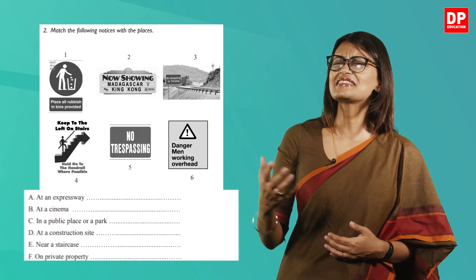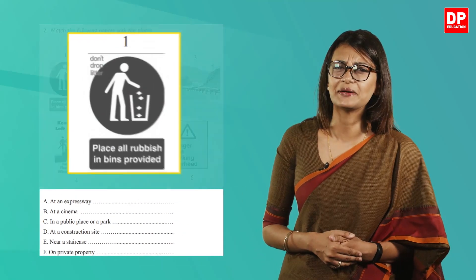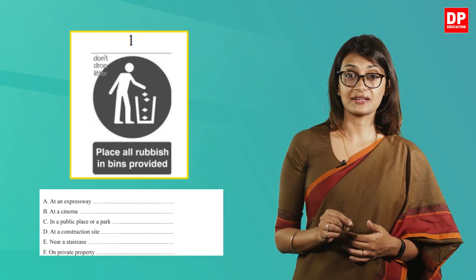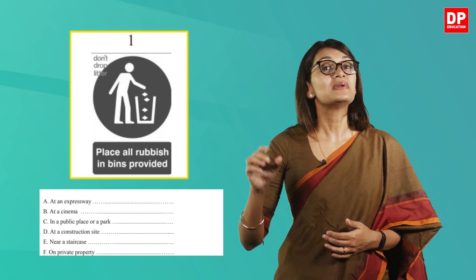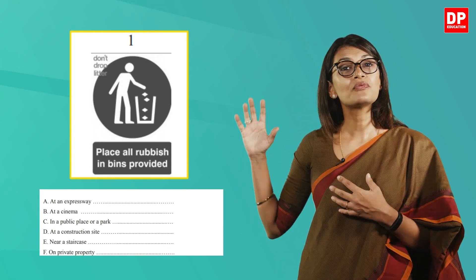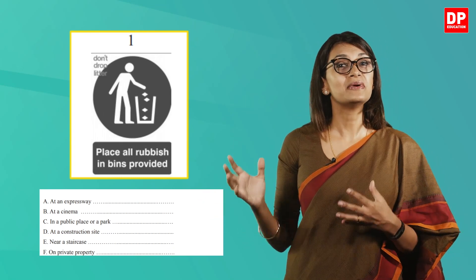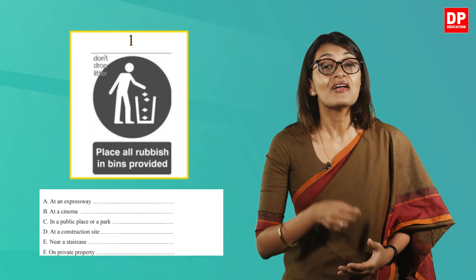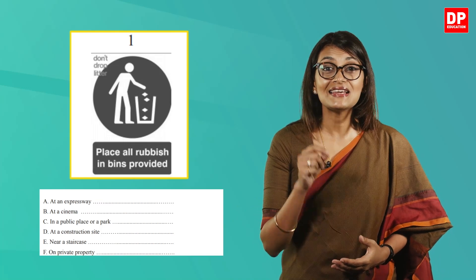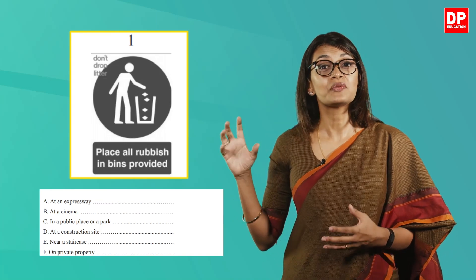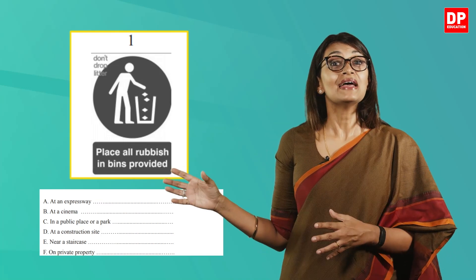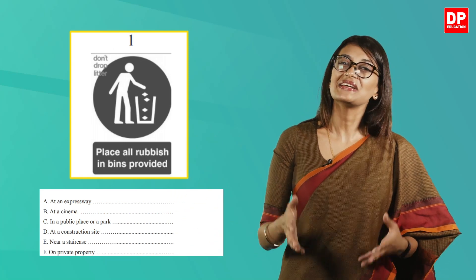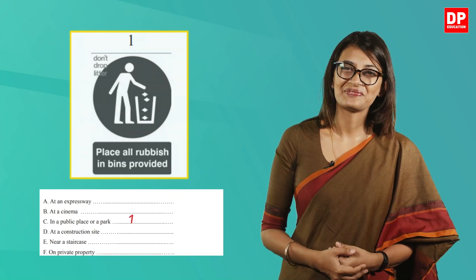Let's look at image one: 'You are expected to place all rubbish in the bins that are provided.' This is a sign that will go up in a public place or a park, so the answer is C.